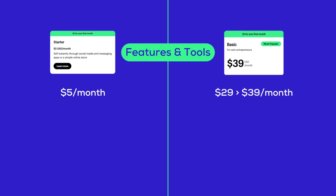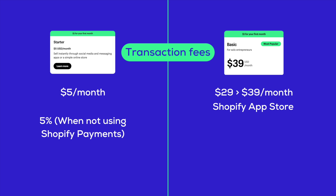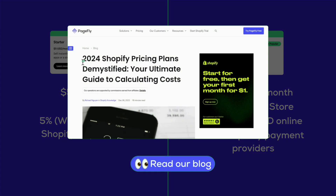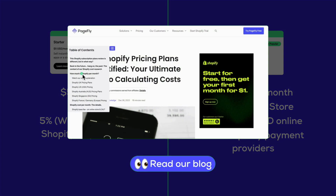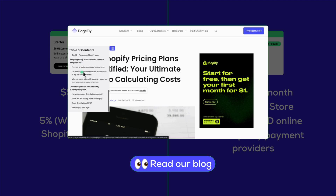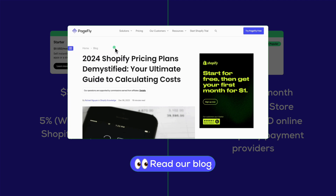Regarding features and tools, if you want to expand functionality through third-party apps, access to Shopify's vast app store is only available with the Basic plan. Regarding transaction fees, the Starter plan has a higher fee of 5% for transactions, while the Basic plan reduces this to 2.9% plus 30 cents for online credit card payments and just 2% for third-party payment processors. For a deeper dive, check out our detailed comparison on our blog — the link is in the description below.